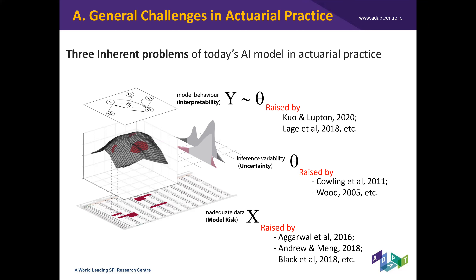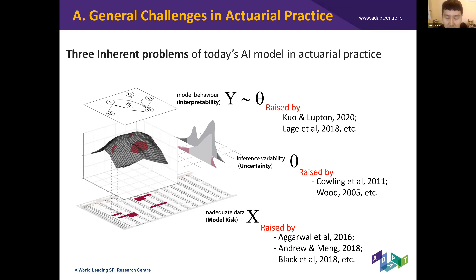Lastly, model risk by definition refers to the diverse consequences that come from decisions based on incomplete data, such as missing data or measurement error. This is very prevalent in actuarial practice because of a complicated data engineering process and regulation. Again, not many AI models can fully deal with inadequate data issues.